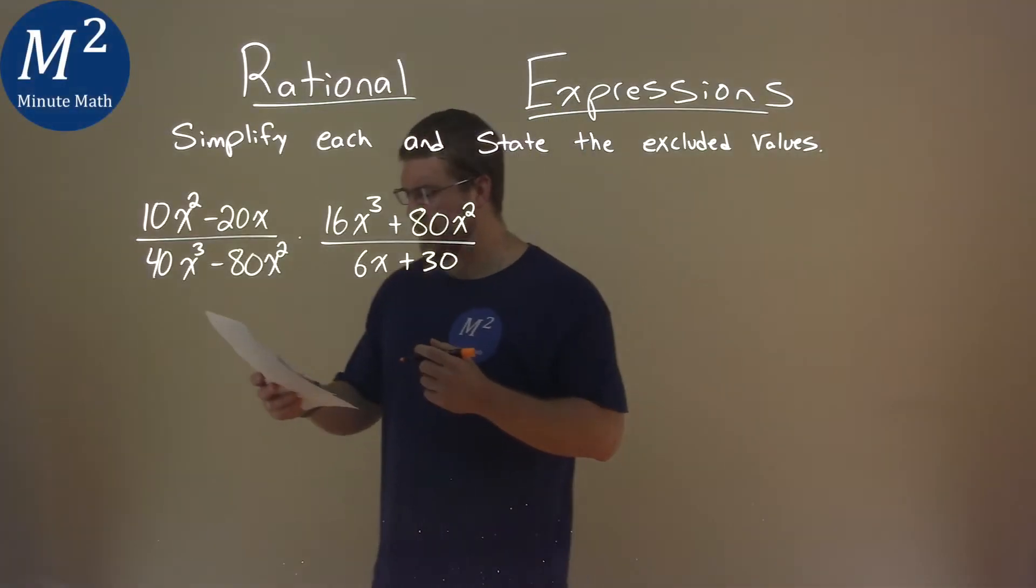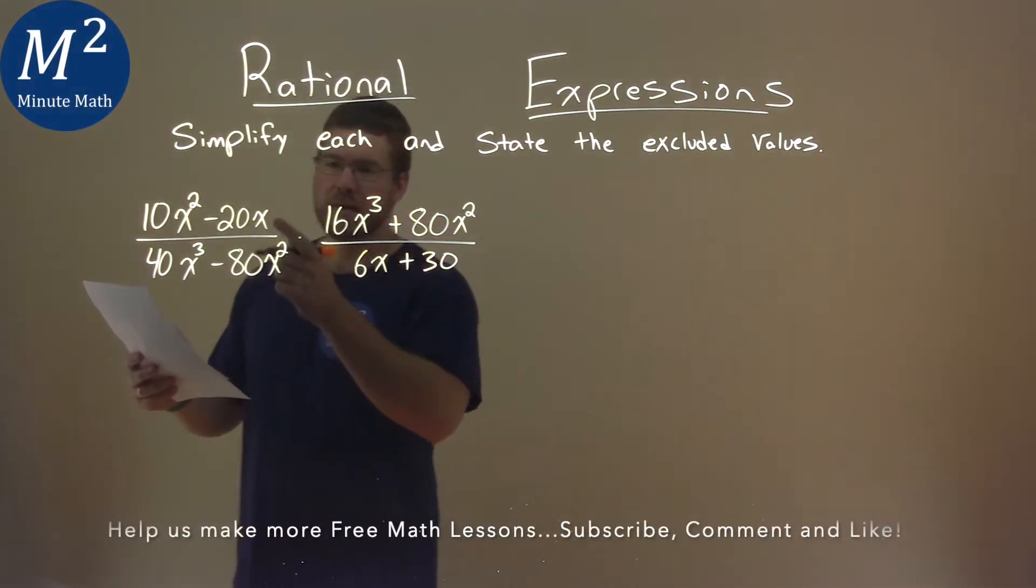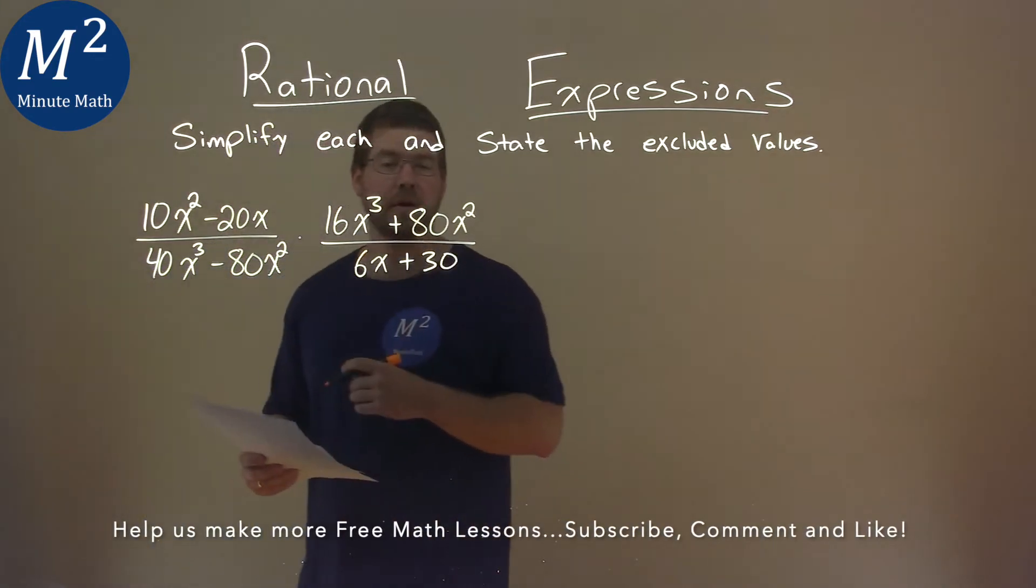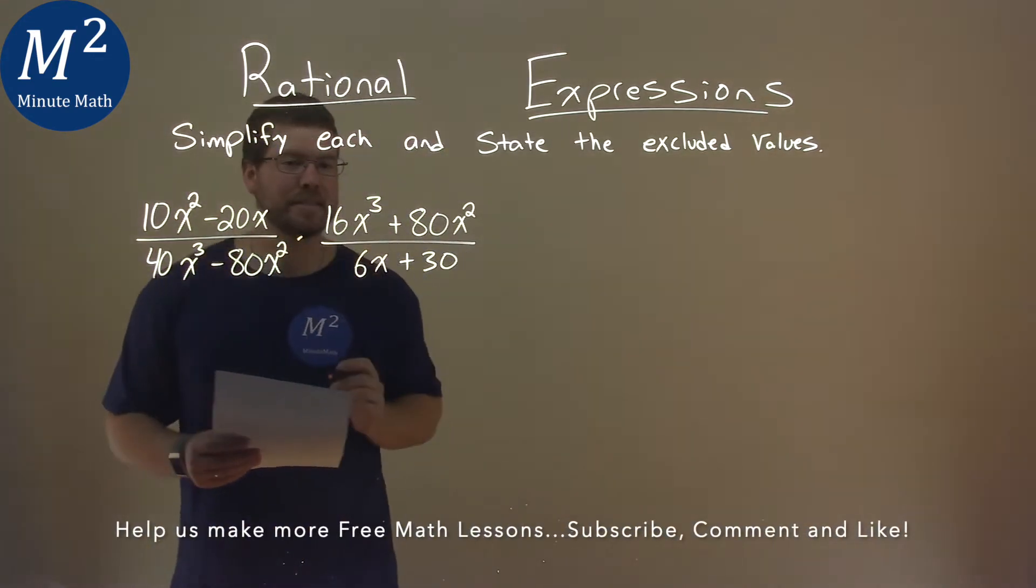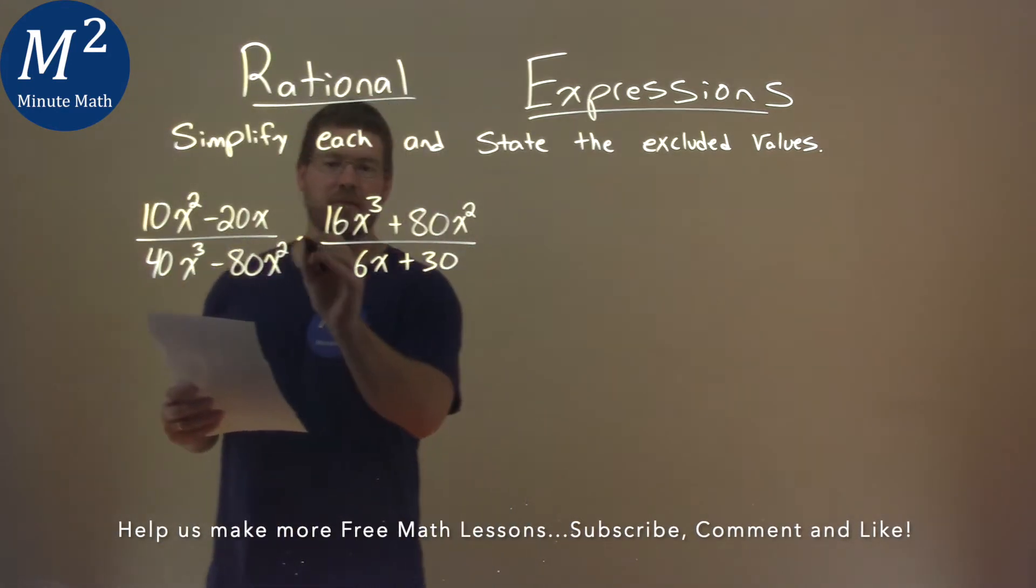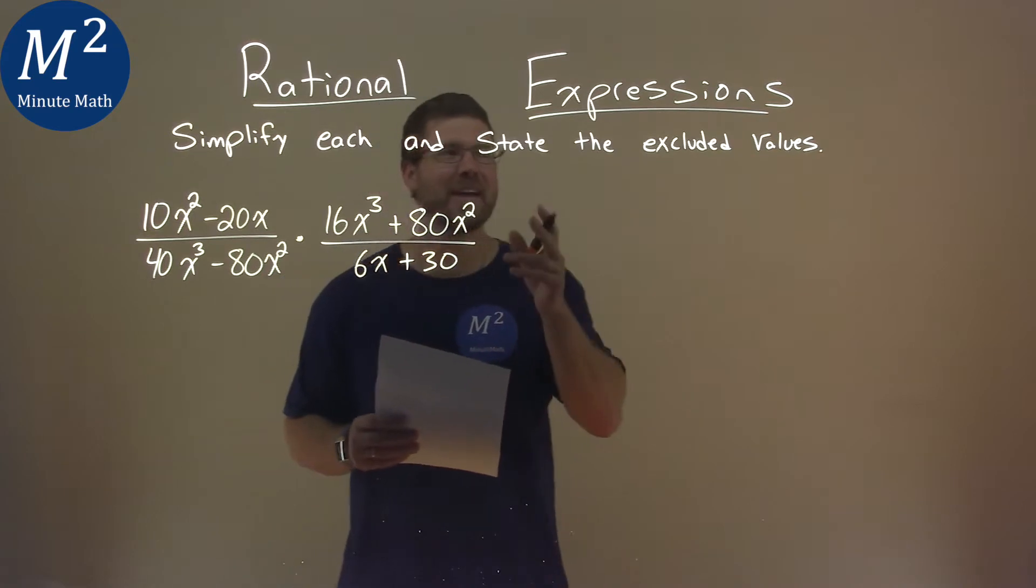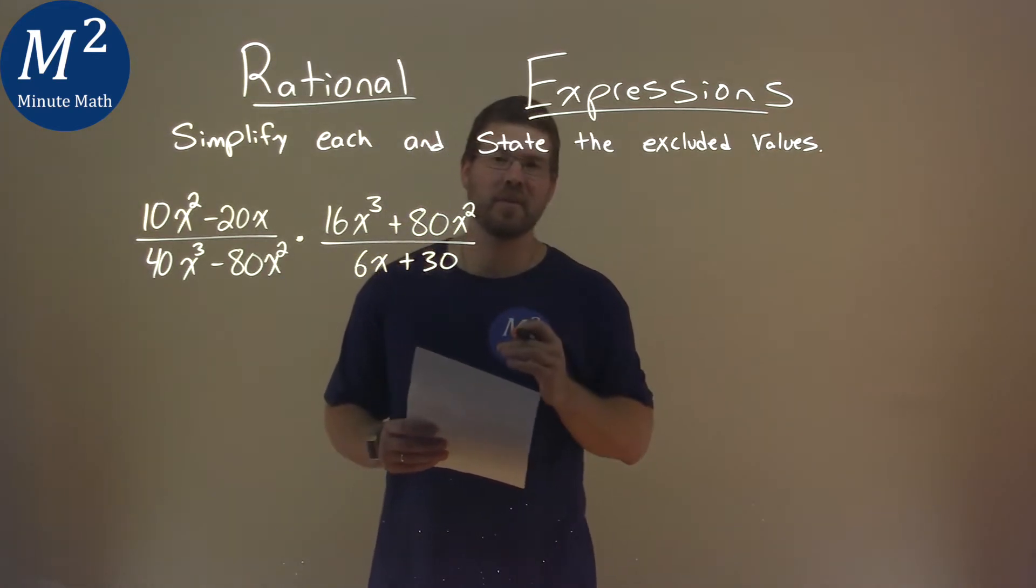We're given this problem right here: 10x squared minus 20x over 40x to the third power minus 80x squared times 16x to the third plus 80x squared over 6x plus 30, and we gotta simplify and state the excluded values.